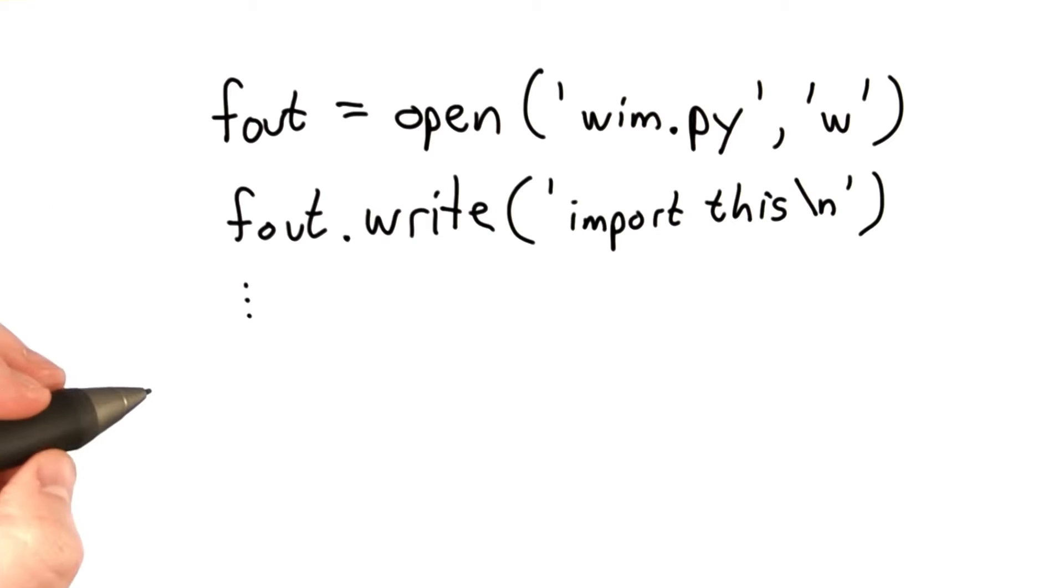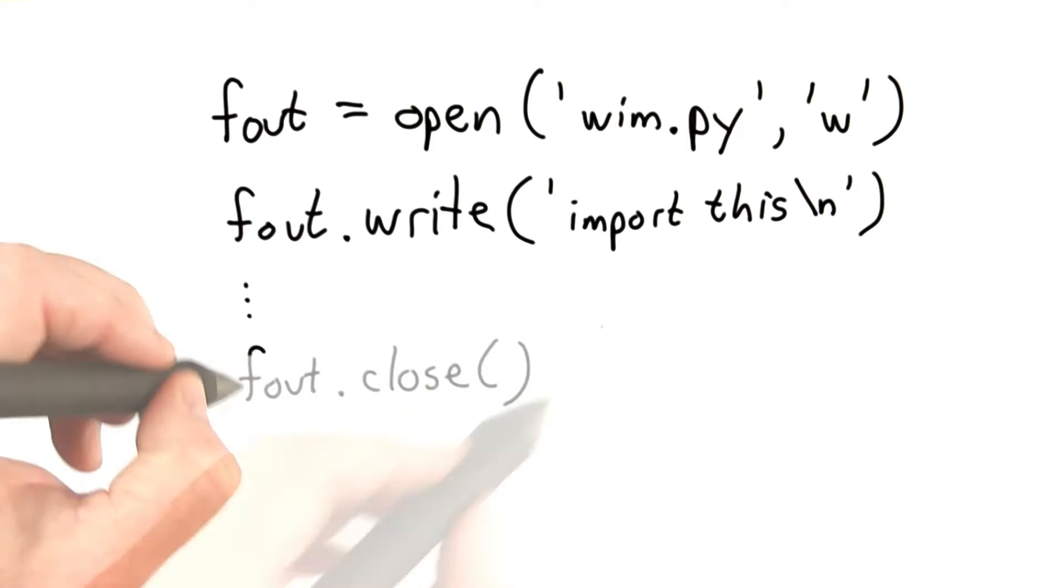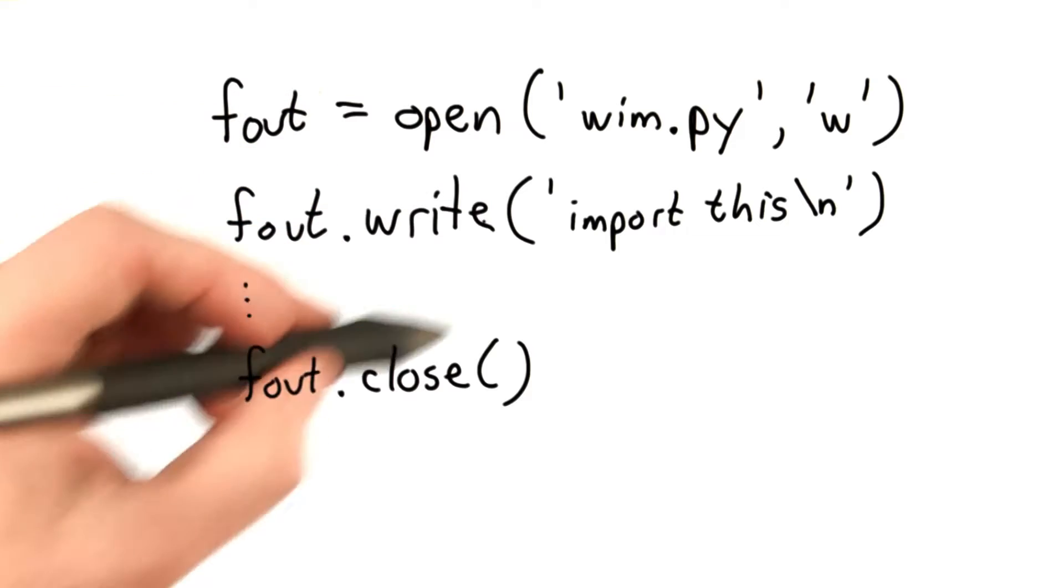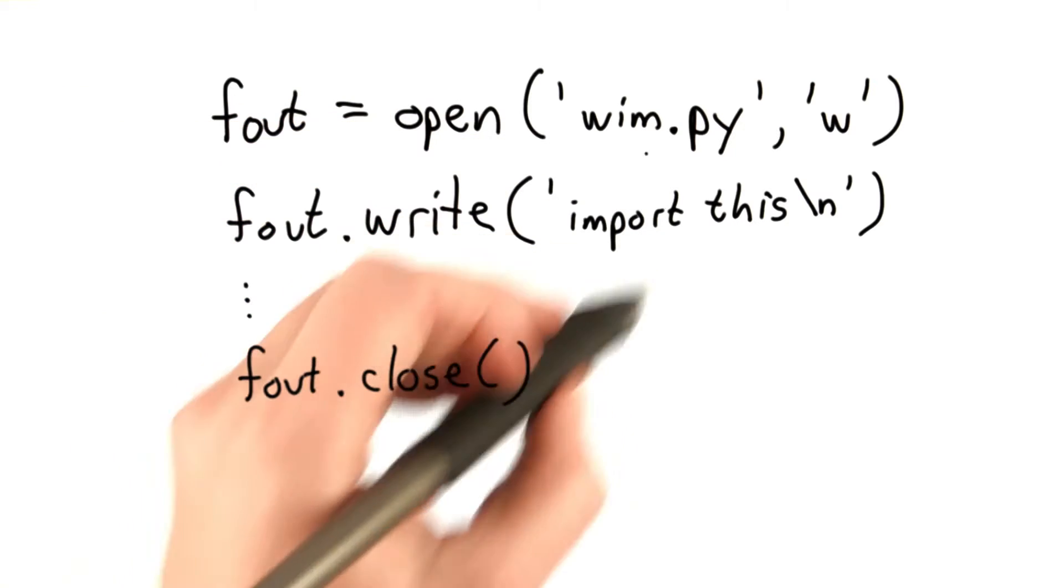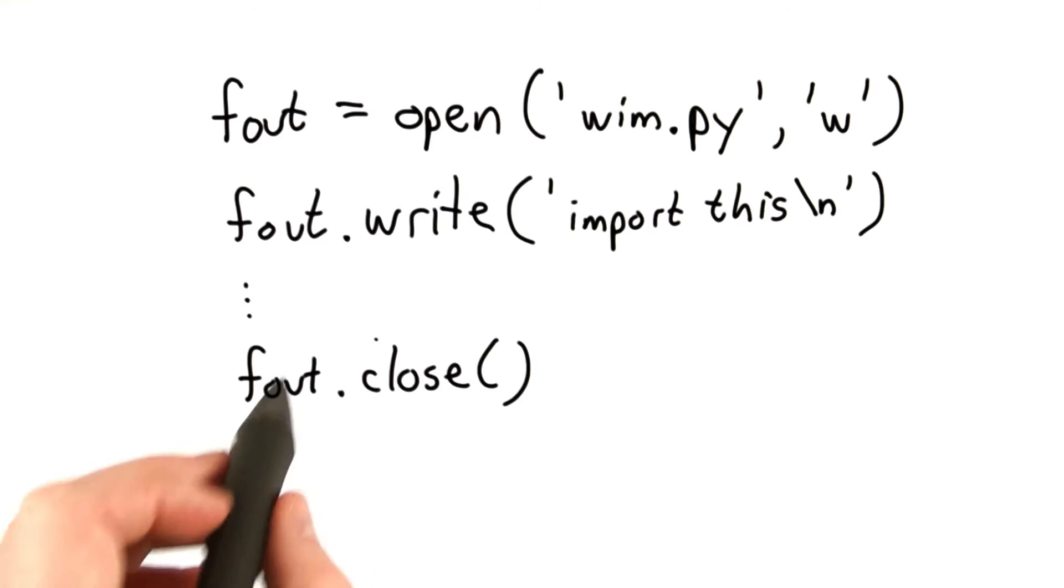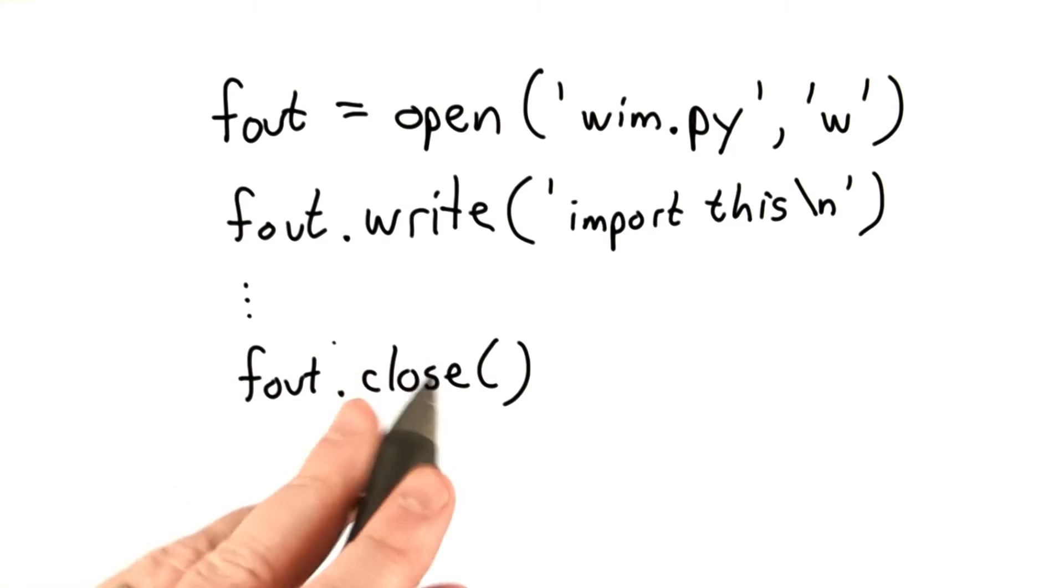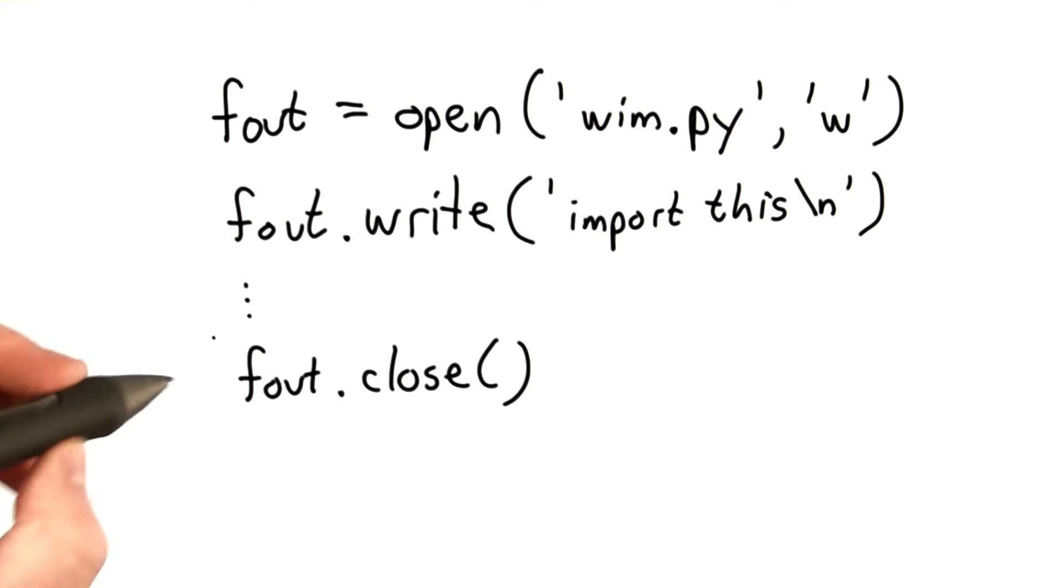When we're done with a file, we should always remember to close it. The reason we want to close files is operating systems do lots of strange things with files to try to maintain them, to buffer them. The changes that we think we made with our program might not actually be there if we don't close it. It also might cause problems if there are open file handles left that weren't closed when the program executed. So we should close the file after we're done with it.